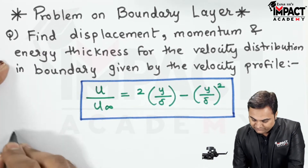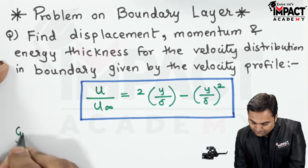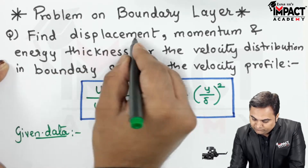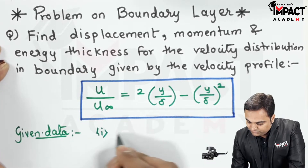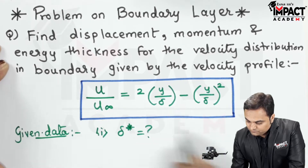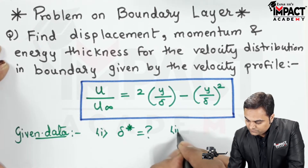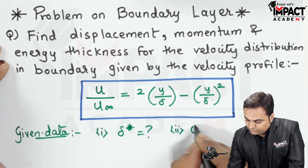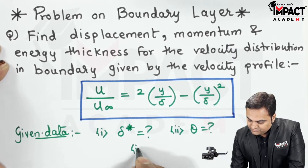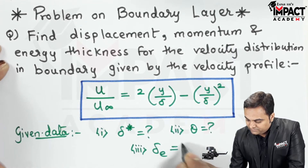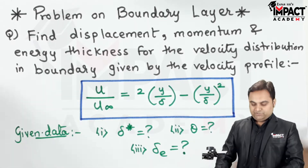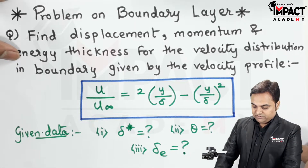We have to find: displacement thickness, denoted by delta star; momentum thickness, denoted by theta; and energy thickness, denoted by delta suffix e. These are the three quantities to find.